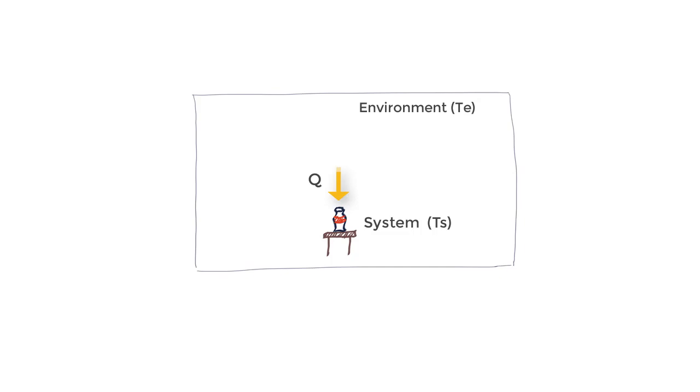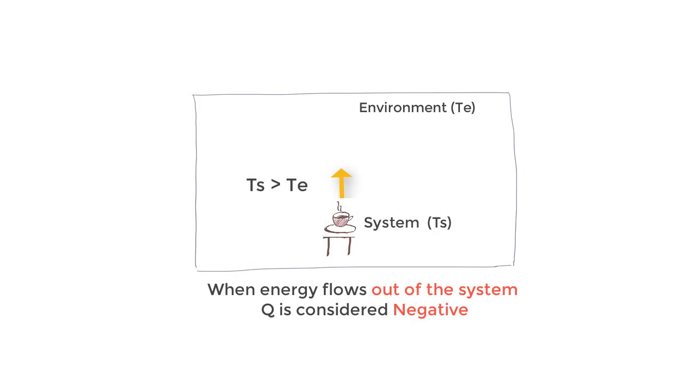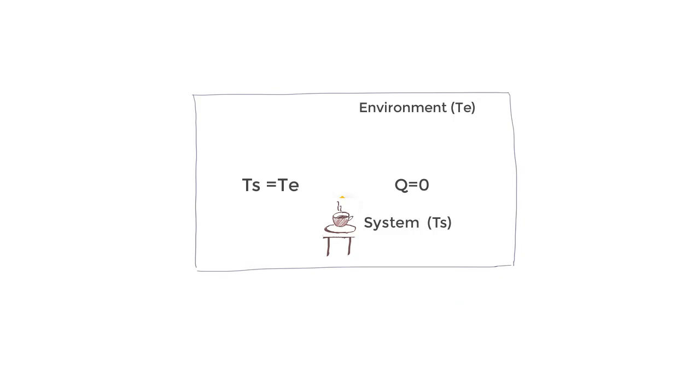We say that Q or heat is positive when the energy is transferred to the system's thermal energy, and negative when it is transferred from the system's thermal energy to the environment. We say that heat is lost by the system. If Ts is greater than Te, energy flows out of the system and Q is less than zero. If Ts equals Te, no heat flows either way and Q is zero. If Ts is less than Te, heat flows from the environment to the system and Q is greater than zero.